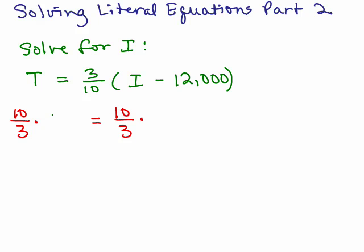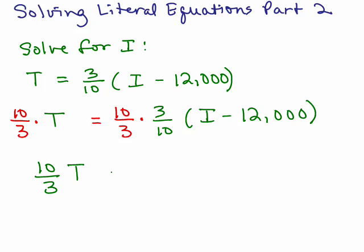We would have 10 thirds times T and 10 thirds times 3 tenths times I minus 12,000. And when we do that then the 10 thirds times 3 tenths cancels so that what I have on the left side is 10 thirds T. I'm going to write it as 10 thirds T equals, and since these cancel I just have I minus 12,000.